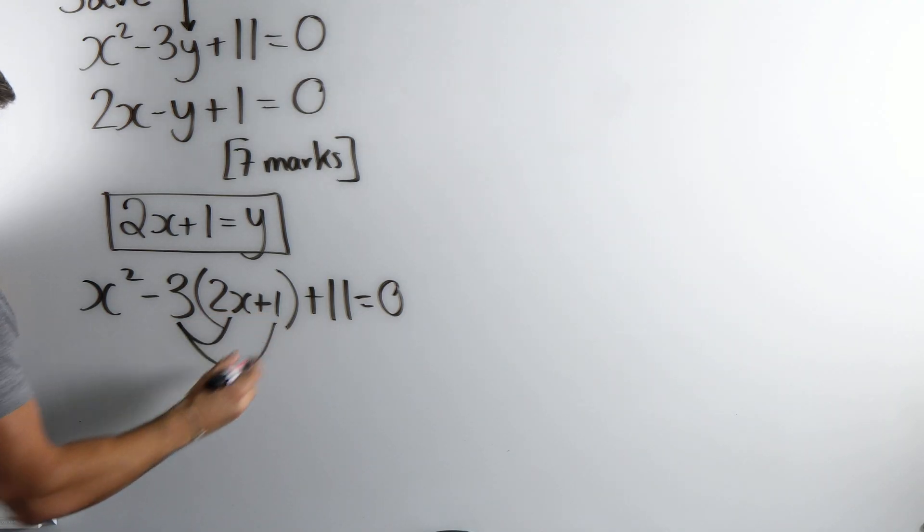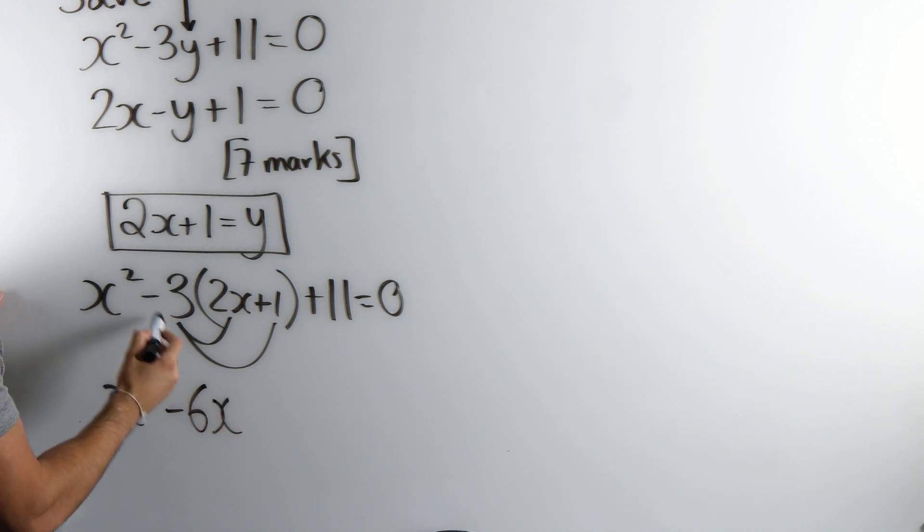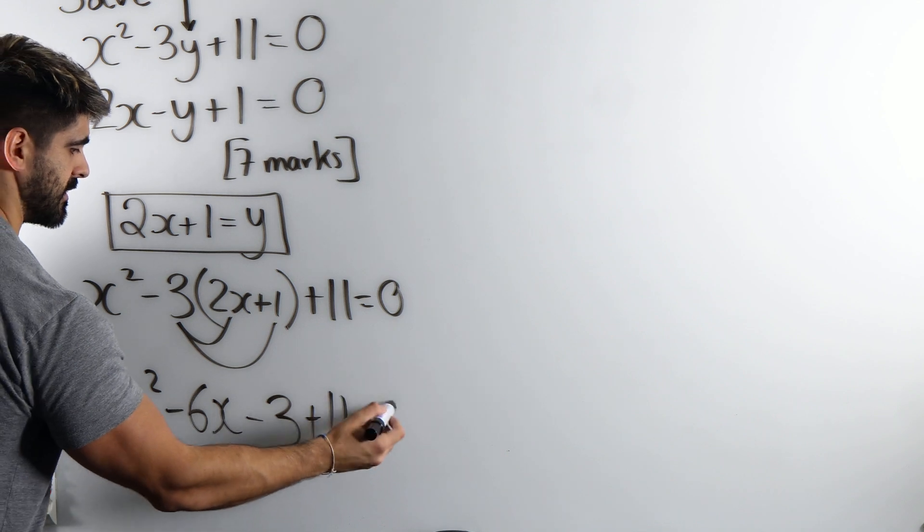Expand. We get x squared minus 6x minus 3 and then plus 11 equals 0.